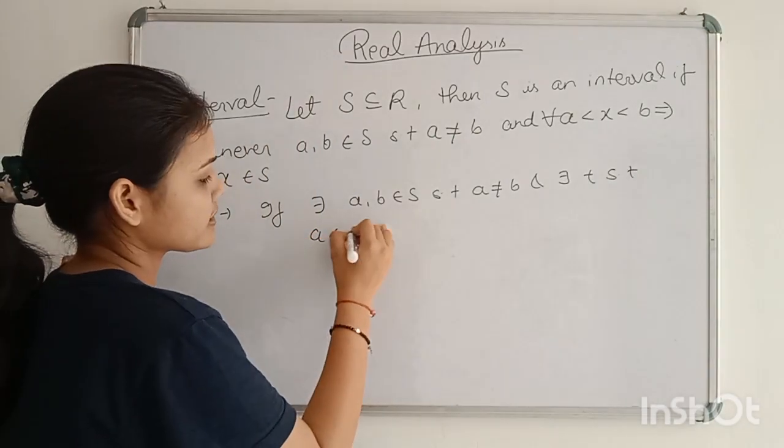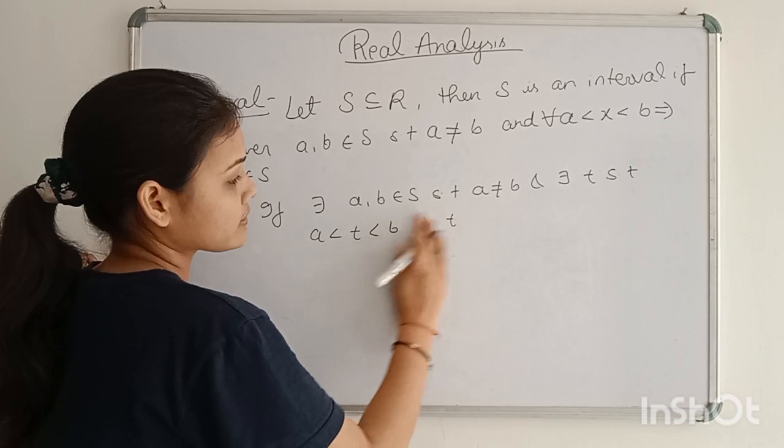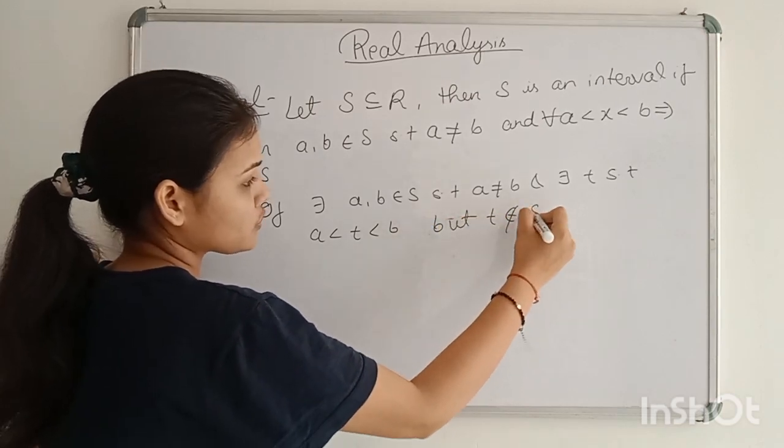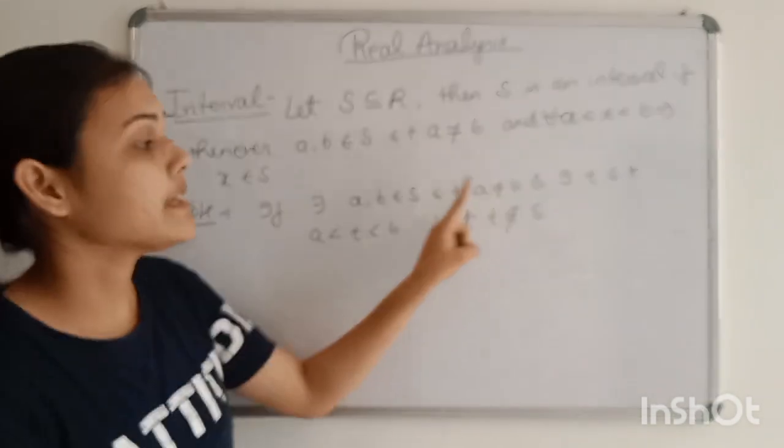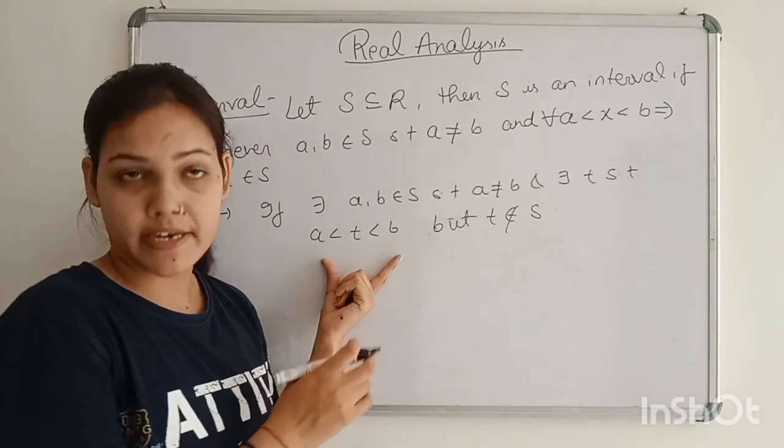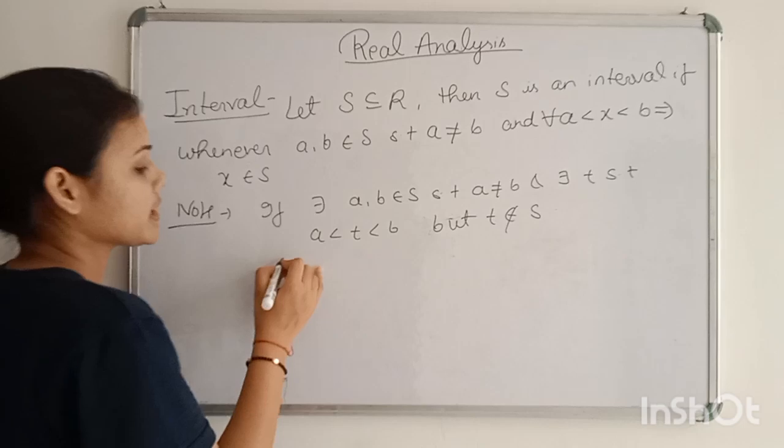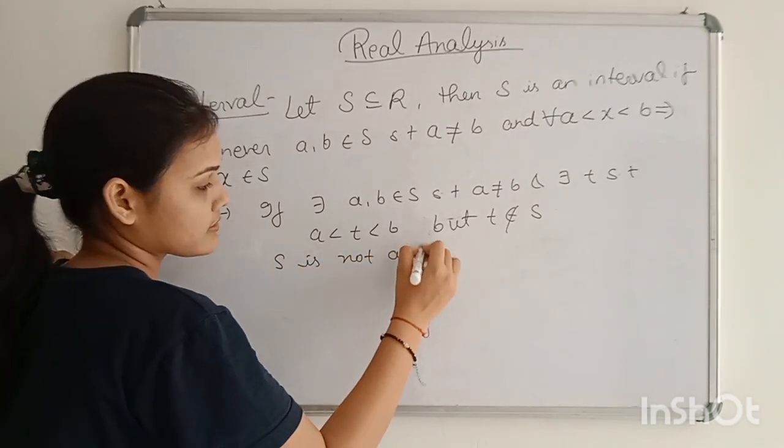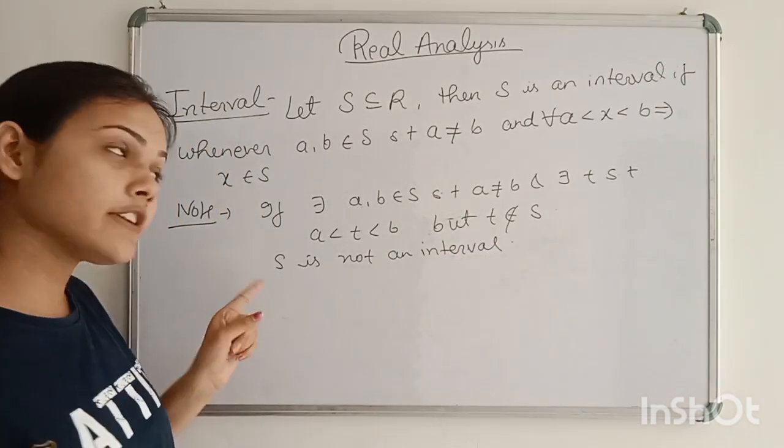A less than T less than B implies T, but if T doesn't belong to S. If we have this example, we have elements but T is not in it. So we call S is not an interval. Clear the definition of interval?